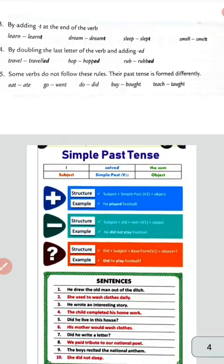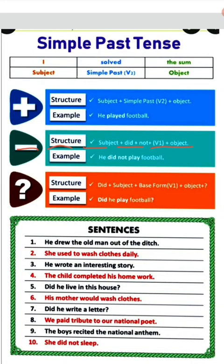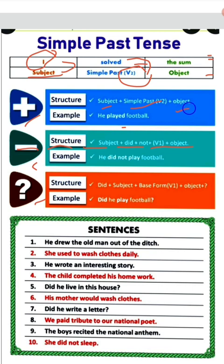Let's see some examples and the format to write this. For a positive sentence, the structure is: subject plus simple past verb (second form) plus object. For example: He played football. Here 'he' is the subject, 'played' is the simple past verb form, and 'football' is the object. जैसे I solved the sum — I is subject, solved is verb का second form, the sum is object।